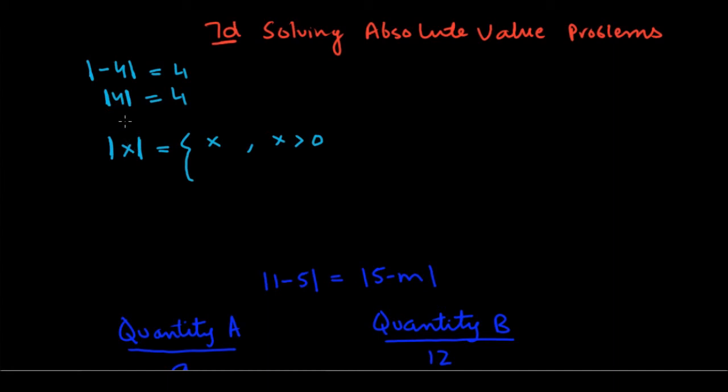Now in the case that x is negative, so x being less than 0, if that's the case, what happens is that the negative number becomes positive. So one way I can represent that is by just putting negative x as the value of absolute value of x.